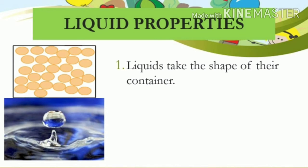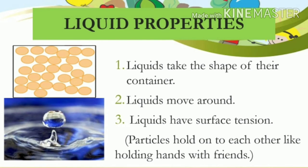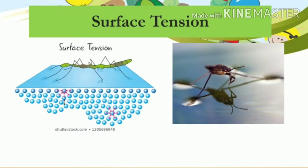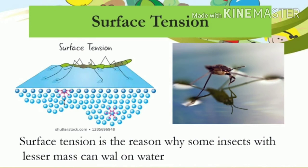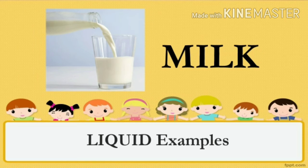Liquid properties: liquid takes the shape of its container and can change shape easily. For example, if you pour water into a square container, the shape of the water will also change into a square. Liquid particles move around freely, unlike solid. Liquids also have surface tension — surface tension means particles hold onto each other, like holding hands with friends. Surface tension is the reason why small insects, like a mosquito, can walk on water; insects with lighter mass can do this. Examples of liquid are paint, water, milk, and more.